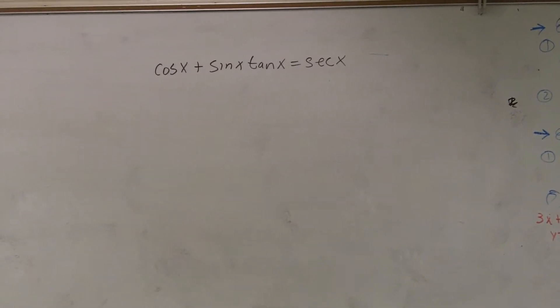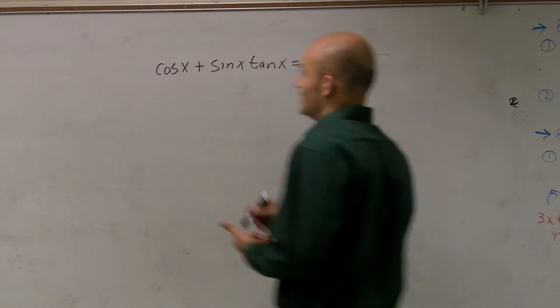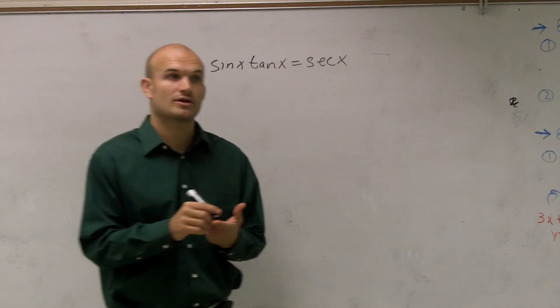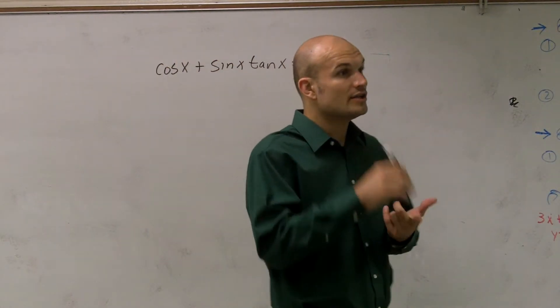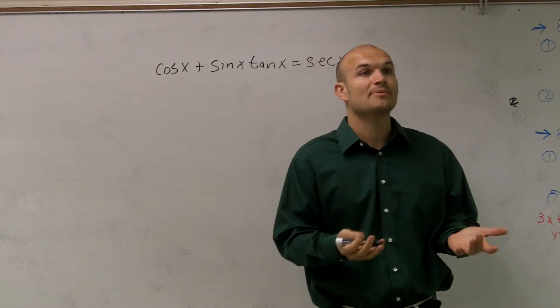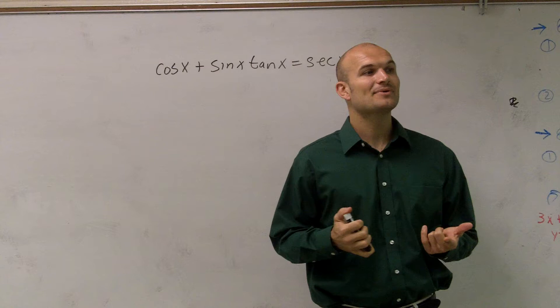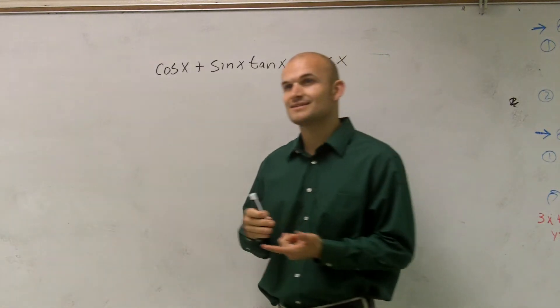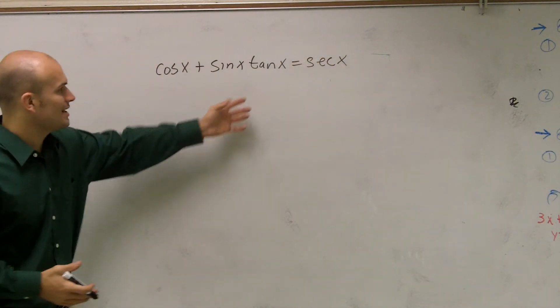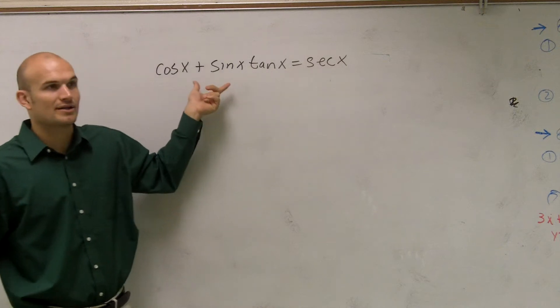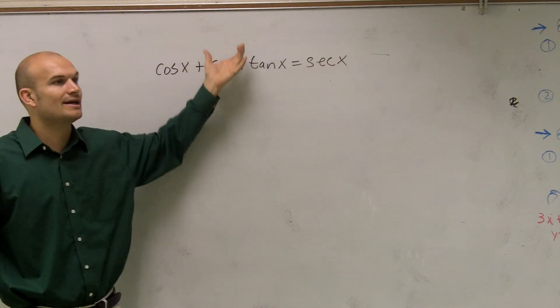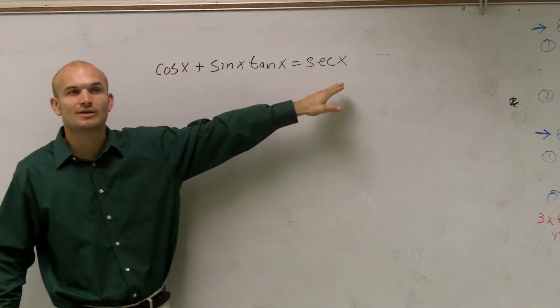All right, ladies and gentlemen, we've been practicing a couple of the guidelines for verifying our trig identities. The first thing is obviously to work with the more complicated side and try to simplify that. We don't want to try to expand secant to make it look like this. We want to go ahead and simplify this, see if we can make it look like secant.